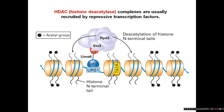Equally, histone deacetylases have to be recruited — they're recruited by repressive transcription factors. For example, an upstream repressor sequence is bound by a DNA binding protein with a repressor domain, which recruits a complex containing SIN3A and a histone deacetylase, so it deacetylates the nucleosomes in the vicinity of that repressor binding site.